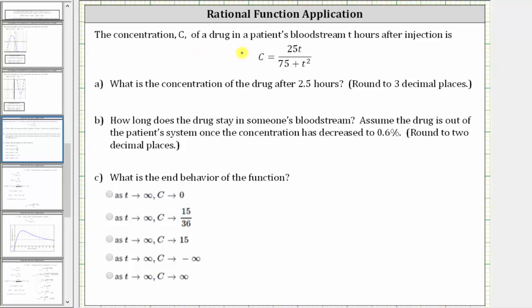The concentration C of a drug in a patient's bloodstream T hours after injection is given by C equals 25T divided by the quantity 75 plus T squared. Part A, what is the concentration of the drug after 2.5 hours? Round to three decimal places.